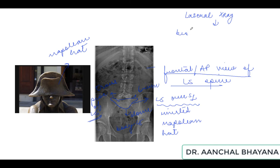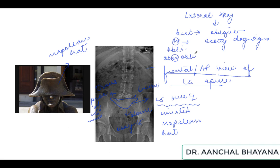To summarize: the first X-ray we order is the lateral view, but the best X-ray is the oblique view. On a normal oblique X-ray, the Scottie dog sign is seen. If there is abnormal lysis in the pars inter-articularis, you will see the beheaded Scottie dog sign. These are the important things to remember about spondylolysis and spondylolisthesis.